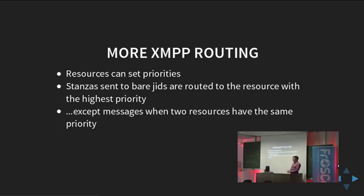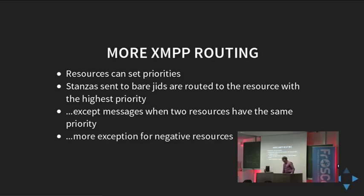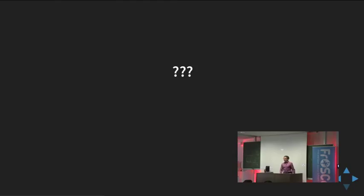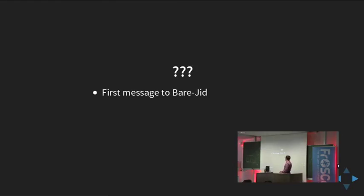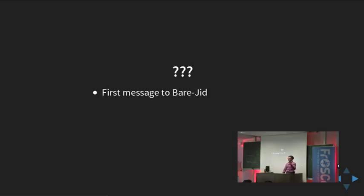Clients can also have multiple resources, which is useful if you want to connect with multiple clients at the same time. Resources can set different priorities, usually integer values between -128 and 128. If you send a stanza to just the bare JID — meaning username at server — it gets routed to the resource with the highest priority. If resources have the same priority, the server just picks one, and there are some exceptions for negative priorities.